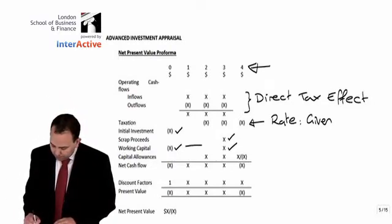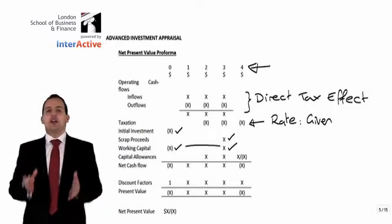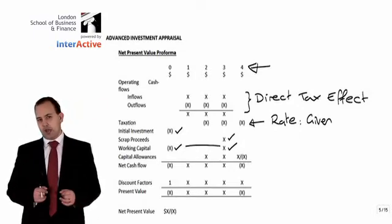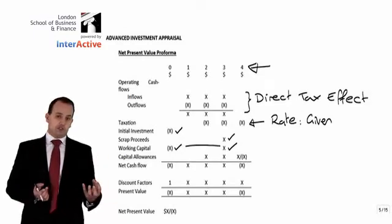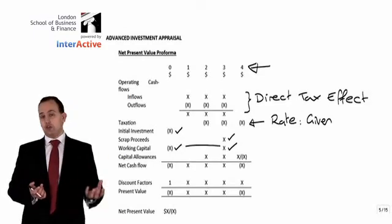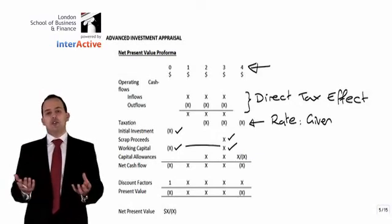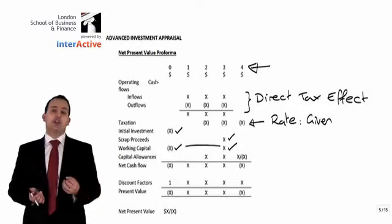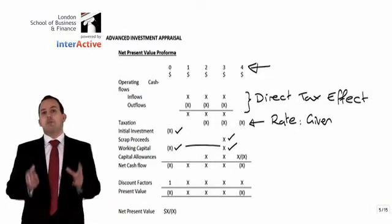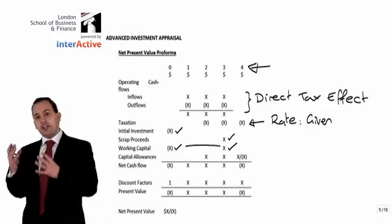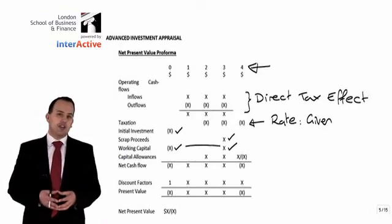It is also possible to have entries that take place in the years in between, and all we need to look at is whether there have been any changes in our total investment in working capital. Each year, we bring in the change in working capital. For example, if we started off with an investment of $100,000 in year nought, and the total investment in working capital increased to $110,000 at the end of year one, then we would have a $100,000 cash outflow in year nought, a $10,000 cash outflow in year one, and then a $110,000 cash inflow in year three when the working capital is released at the end of the project.